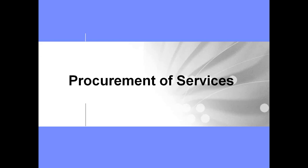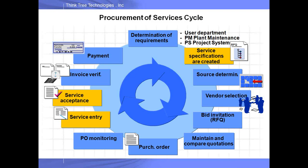The next topic is procurement of services. Procurement of services means buying a service — for example, having someone come to clean your windows, fix your fax machine, or paint your walls. In this case, you are not buying an item but buying a service, and the service provider delivers those services to your company.